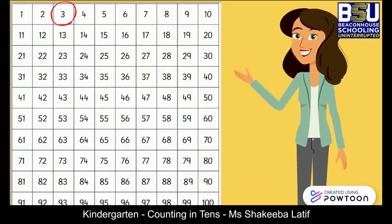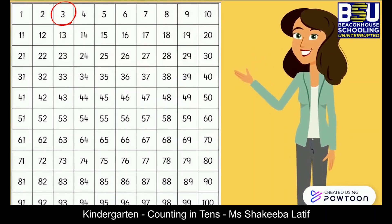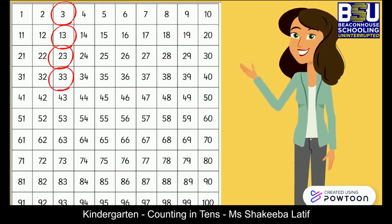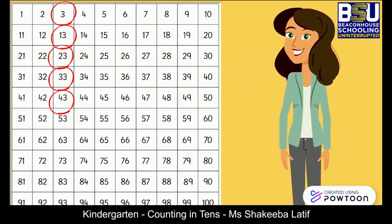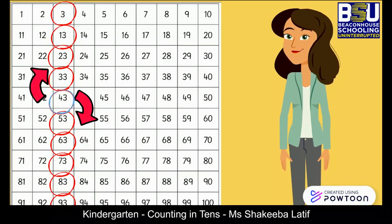Counting forward 10 more spaces from 3, the next numbers will be 13, then 23, 33, 43, 53, 63, 73, 83, and 93. Notice that 10 more than 43 is 53, and 10 less is 33.